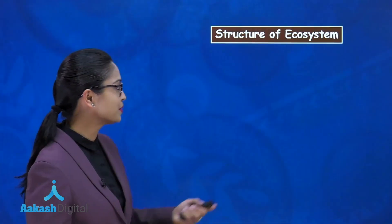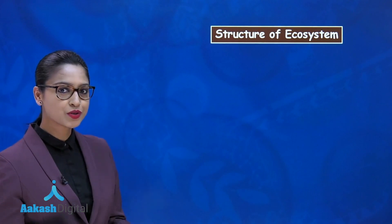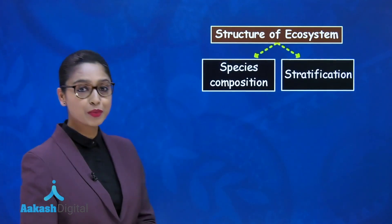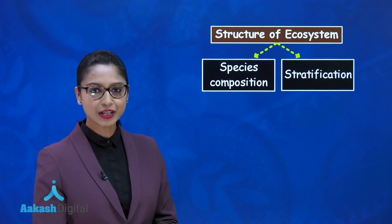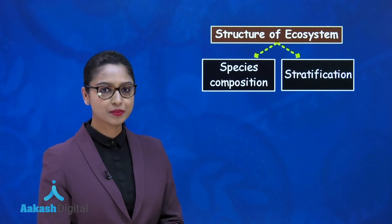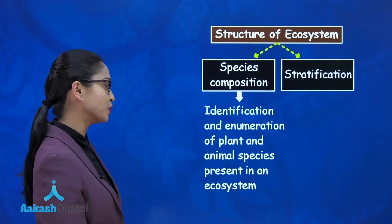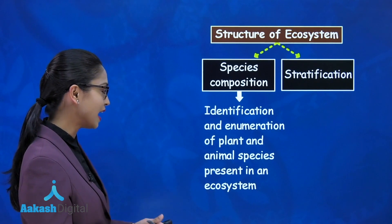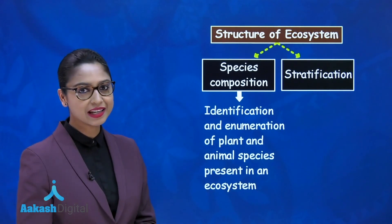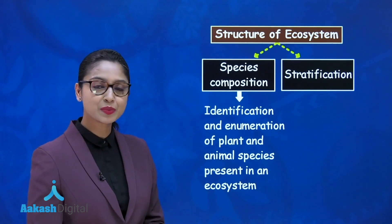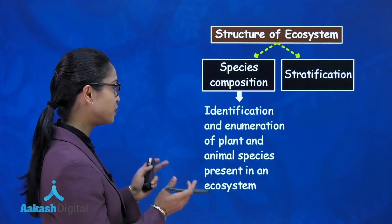Now let's talk about the structure of ecosystem. The structure of ecosystem is formed by the interaction of biotic and abiotic components. Mainly we have species composition and stratification. Species composition means the identification and enumeration of plants and animal species present in an ecosystem — that is, the types and number of species present.